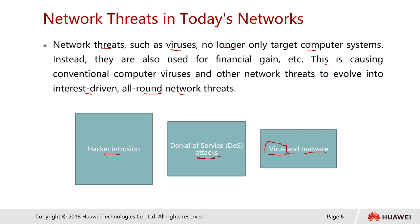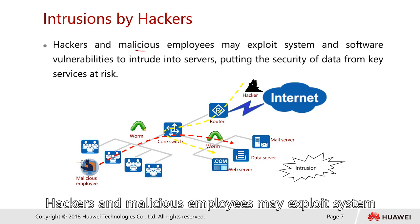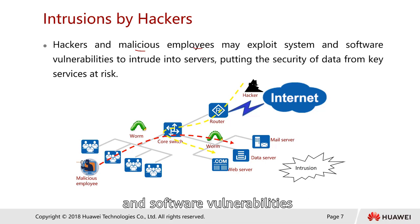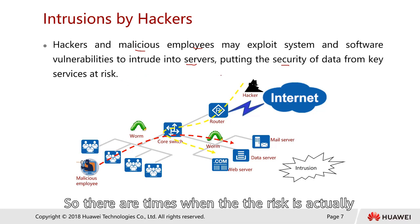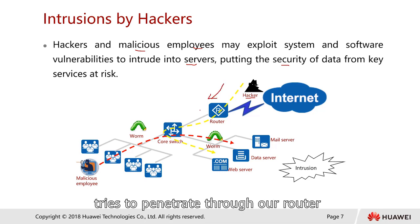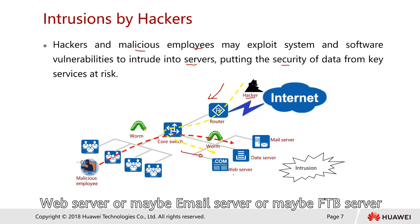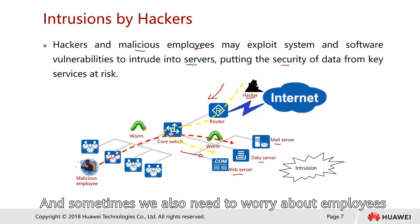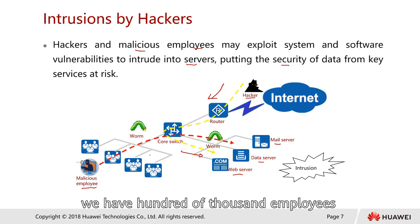Hackers and malicious employees may exploit system and software vulnerabilities to intrude into servers, putting the security of data from key services at risk. Sometimes a hacker from outside the internet tries to penetrate through a router or firewall into the system, targeting servers such as web servers, email servers, or FTP servers. This is a kind of intrusion.